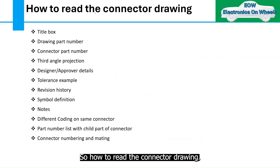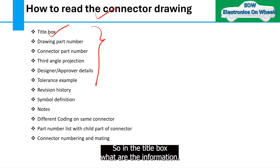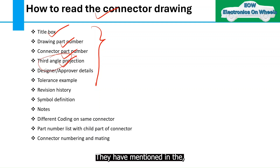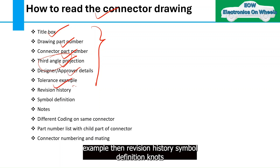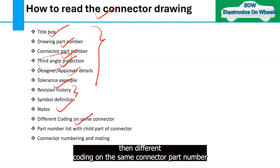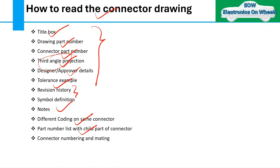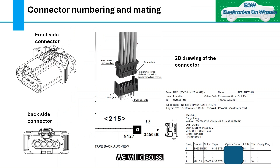So, how to read the connector drawing. Today we will discuss: the title box information, drawing part number, connector part number, angle projection, designer approval, detail tolerance, revision history, symbol definition, notes, and different coding on the same connector.